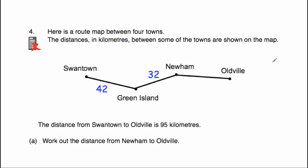Question number 4 — here's a route map between four towns: Swan Town, Green Island, Newham and Oldville. The distances are in kilometres between the towns shown on the map. We know it's 42 kilometres from Swan Town to Green Island, 32 kilometres from Green Island to Newham, and we don't know the distance from Newham to Oldville. But we're told the distance from Swan Town to Oldville is 95 kilometres. Part A is work out the distance from Newham to Oldville, so we're trying to work out this distance.